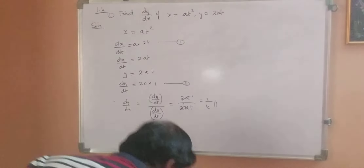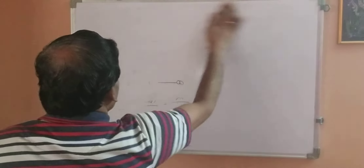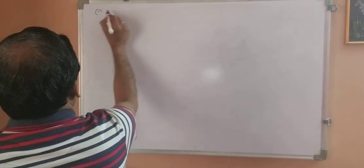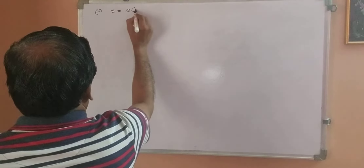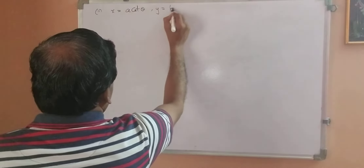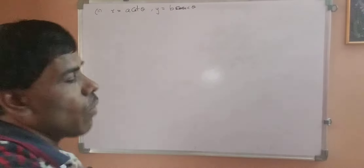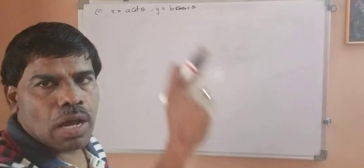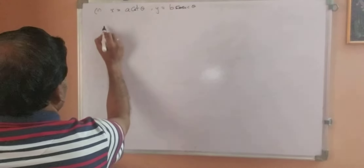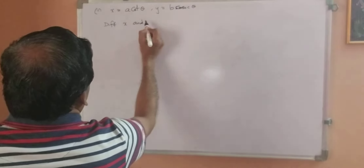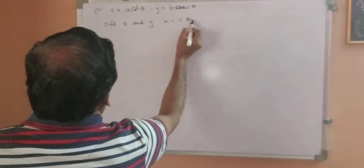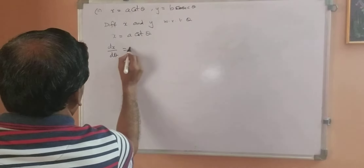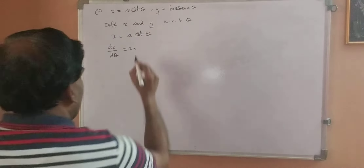This is how we do parametric function derivatives. We will do at least 7 to 8 sums and then you will understand better. Second sum: x equals a·cot θ and y equals b·cosec θ. Here x is a function of theta and y is also a function of theta, so theta is the parameter. Now differentiating x and y with respect to theta.